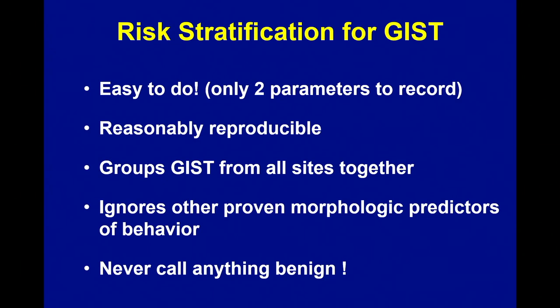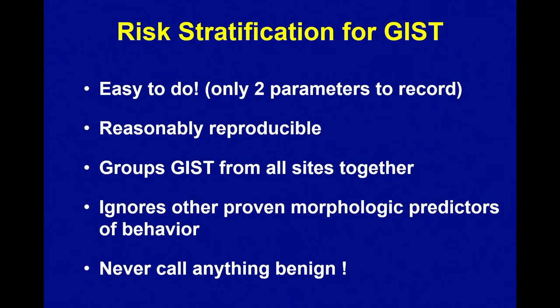It would be like writing an article on cancer of the GI tract and putting in 50 cases of gastric cancer and 50 cases of colon cancer — nobody would do that because we know those are totally different tumors, and the same thing applies here. It also still ignores other proven morphologic predictors. For example, when a GI stromal tumor invades the overlying mucosa and surrounds the glands, that's always a bad sign — but it's never found in any of this risk stratification analysis, despite being highly predictive of malignant clinical behavior.